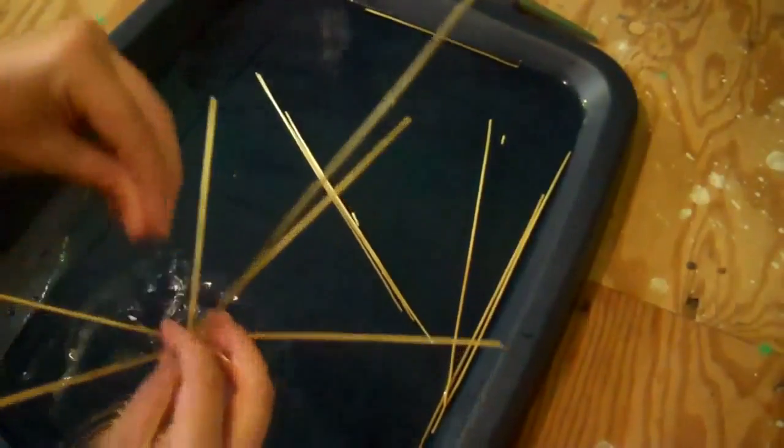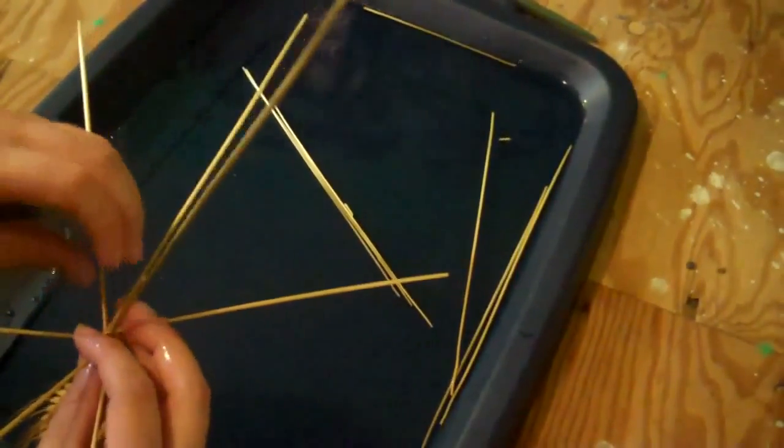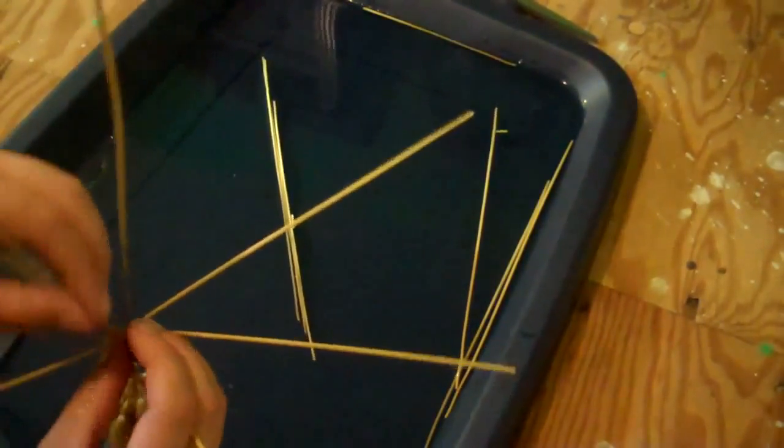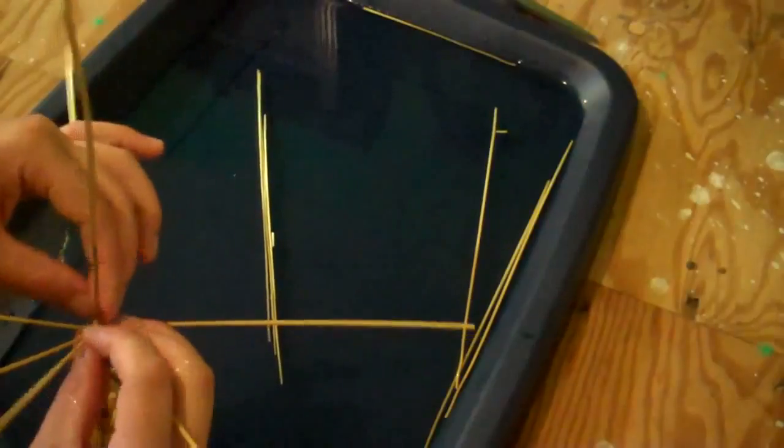Every few minutes you'll want to drip some water onto your weaving to keep the stems wet and pliable. Eventually your weaving begins making a twisty pattern around the core stem.